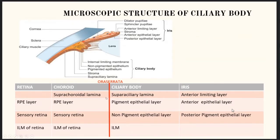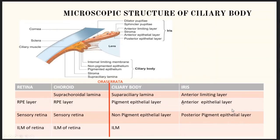The stroma is lined by two layers of epithelium. The outermost is the pigment epithelium layer. The retinal pigment epithelium is anteriorly continued as the pigment epithelium layer of the ciliary body at the ora serrata, and this is anteriorly continued as the anterior epithelium layer of the iris. Inner to the pigment epithelium layer is the non-pigmented epithelium layer. The sensory retina at the ora anteriorly continues as the non-pigmented epithelial layer, which continues anteriorly as the posterior pigment epithelial layer of the iris. The non-pigmented epithelial layer basement membrane is called the inner limiting membrane, and it is the anterior continuation of the internal limiting membrane of the retina.